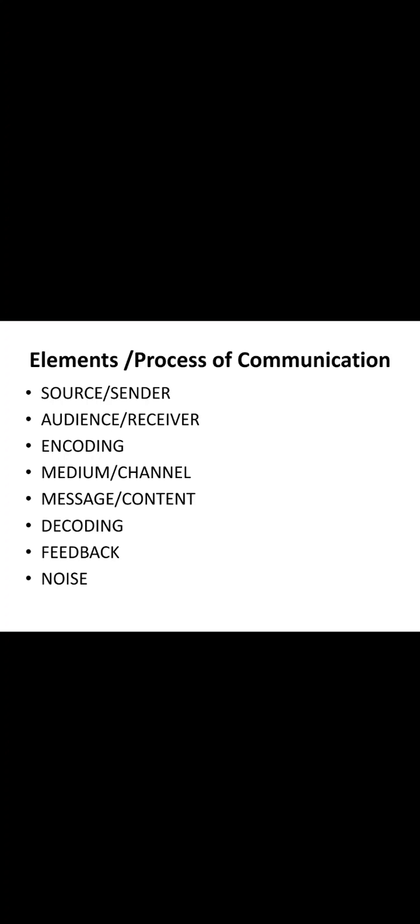The next element is encoding. The sender must translate the message into a language or form that the receiver can understand — that is called encoding. The fourth element is the medium or channel of communication. The right media must be selected — whether face-to-face communication or written communication — and that should be decided well in advance by both sender and receiver.